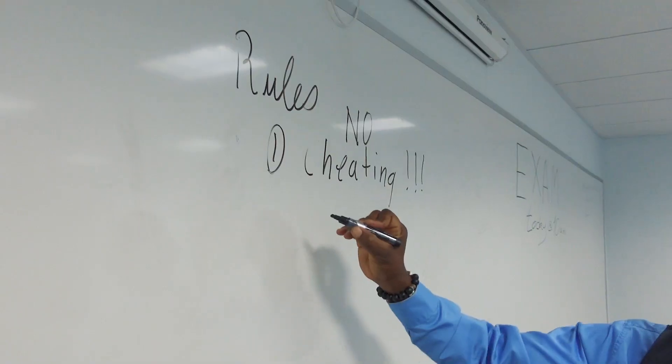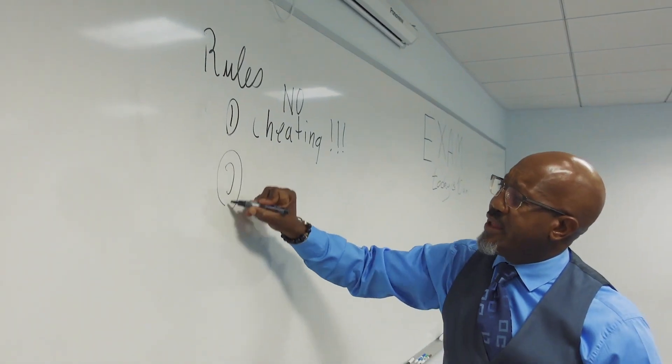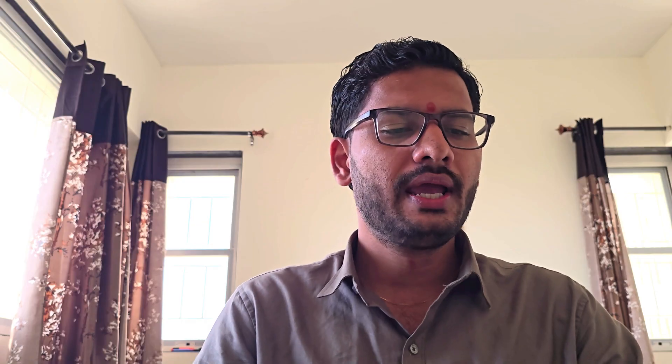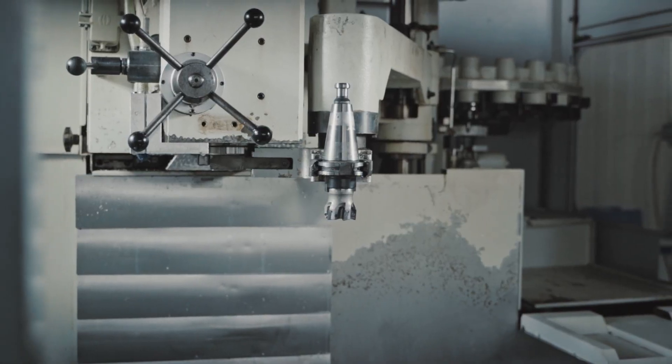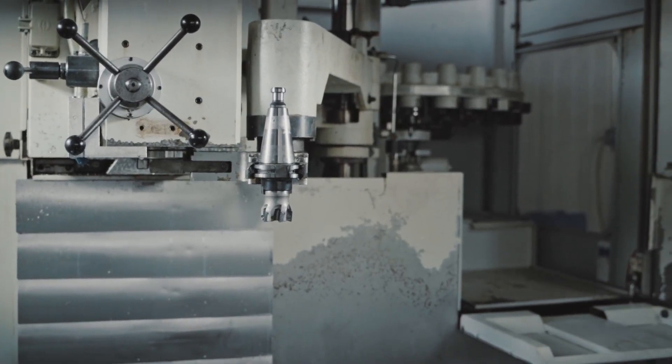The eleventh role in industrial engineering is measurer — what they do is obtain data and facts about existing conditions. The twelfth role is project manager, who operates, supervises, and evaluates projects.